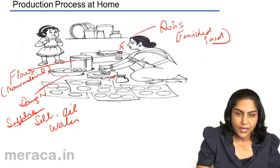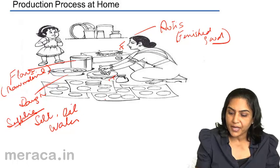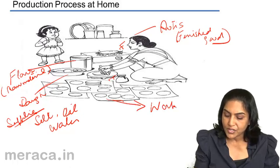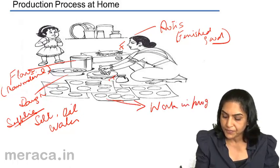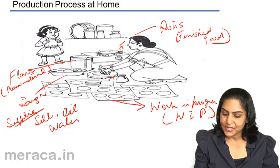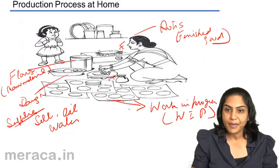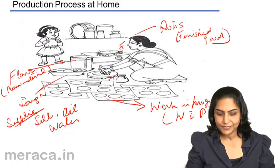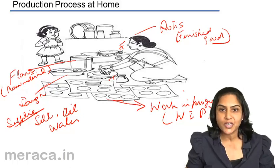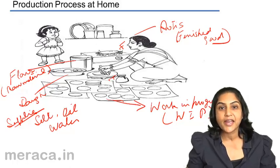The items in between — the dough, the flattened bread, etc. — are neither raw material nor finished goods. They are partly finished goods and they are often referred to as work in progress. This is called work in progress since this is work in the process of material being converted to finished goods. This is the description of a simple production process at home where you have kinds of inventories of raw material, work in process, and finished goods.